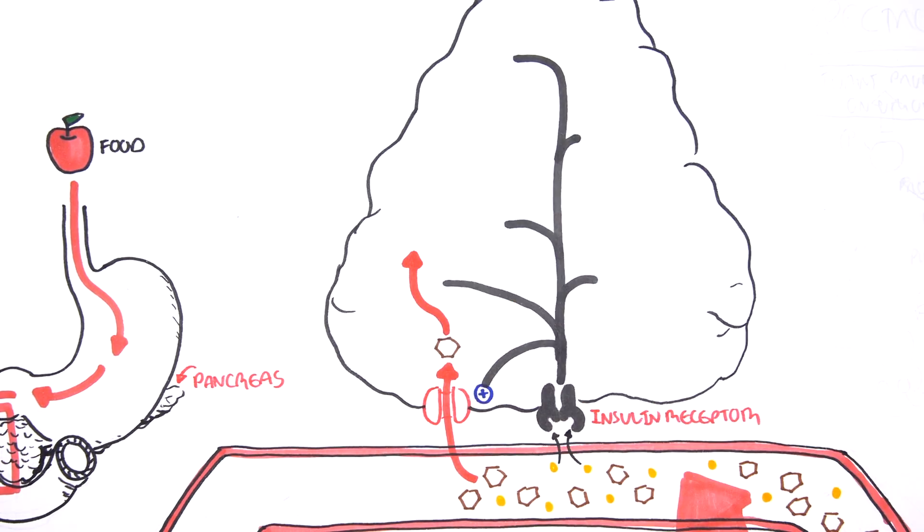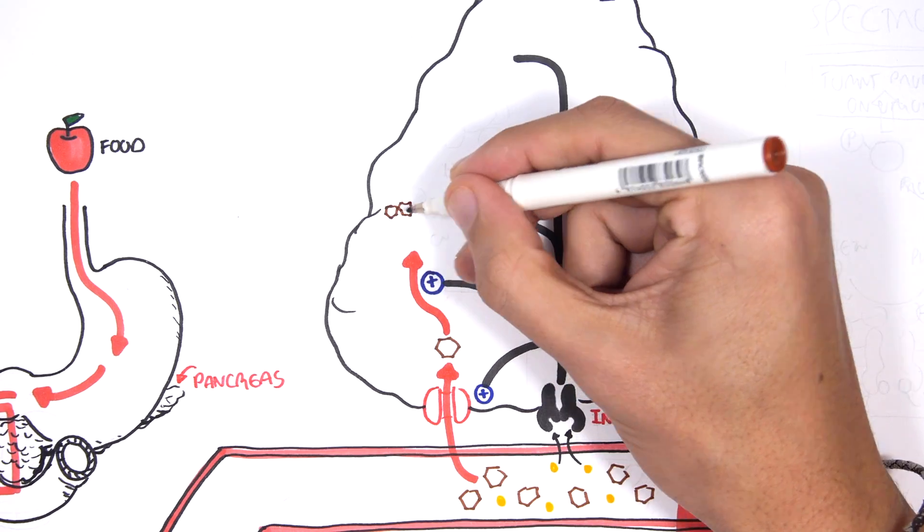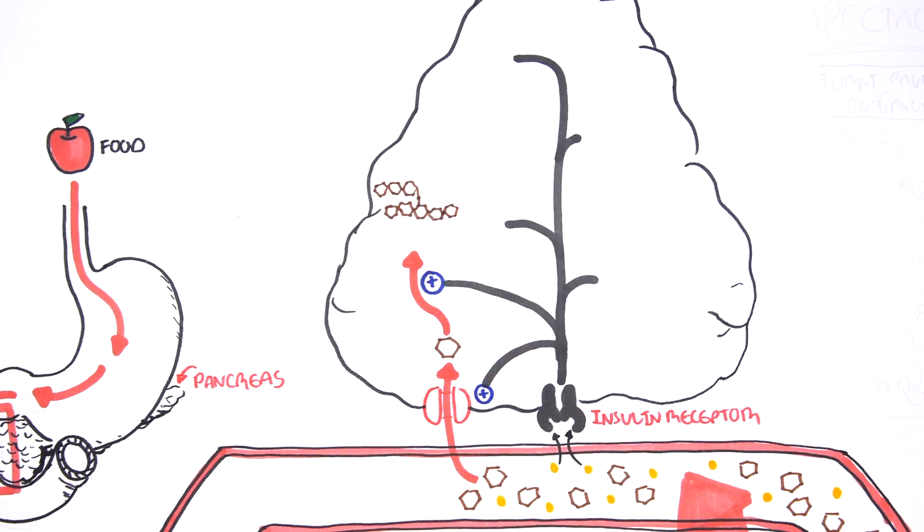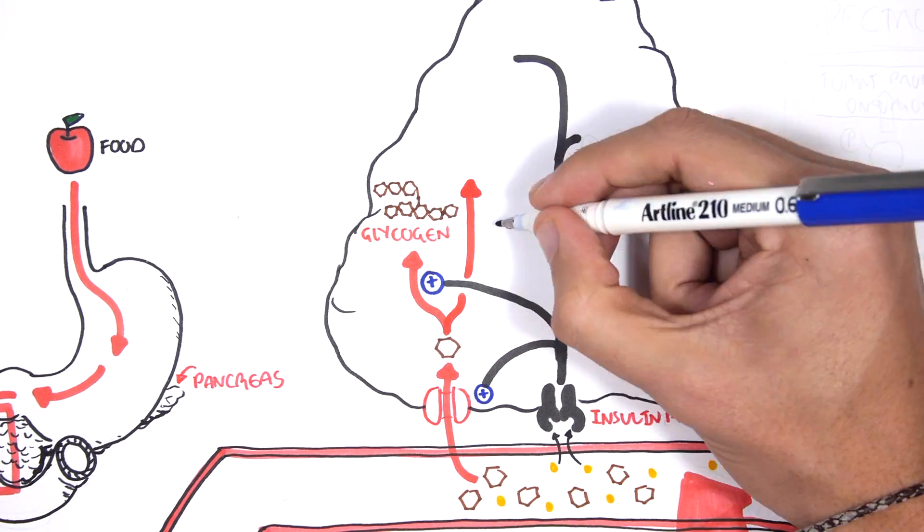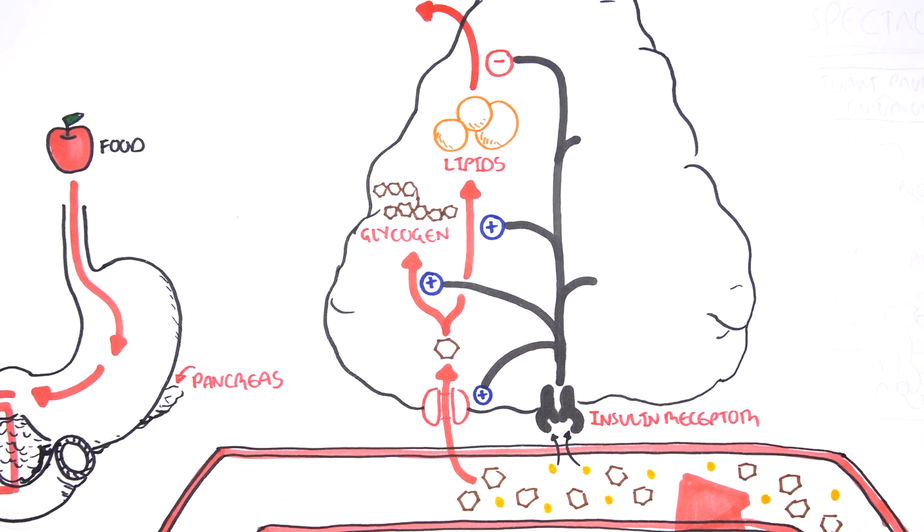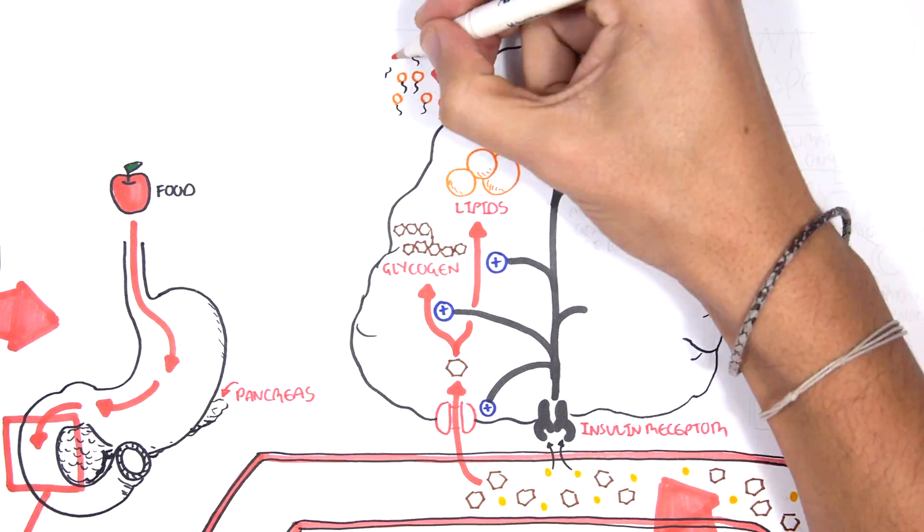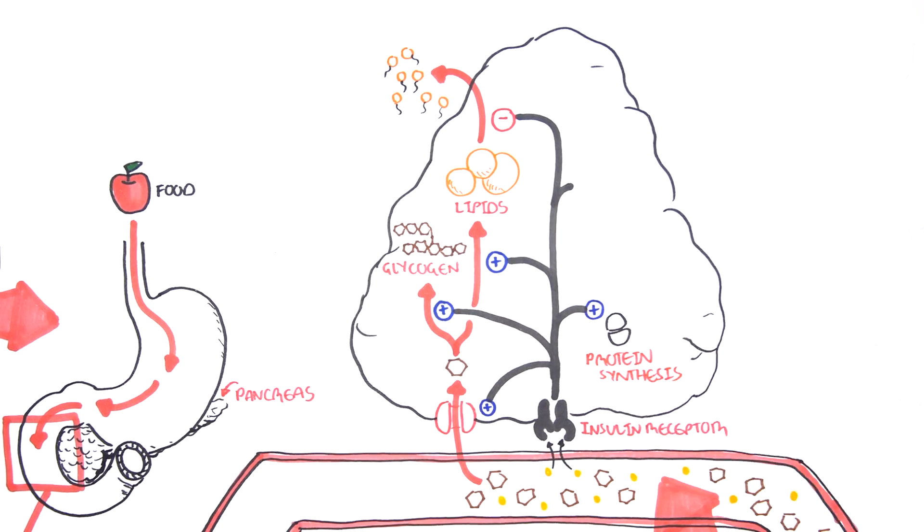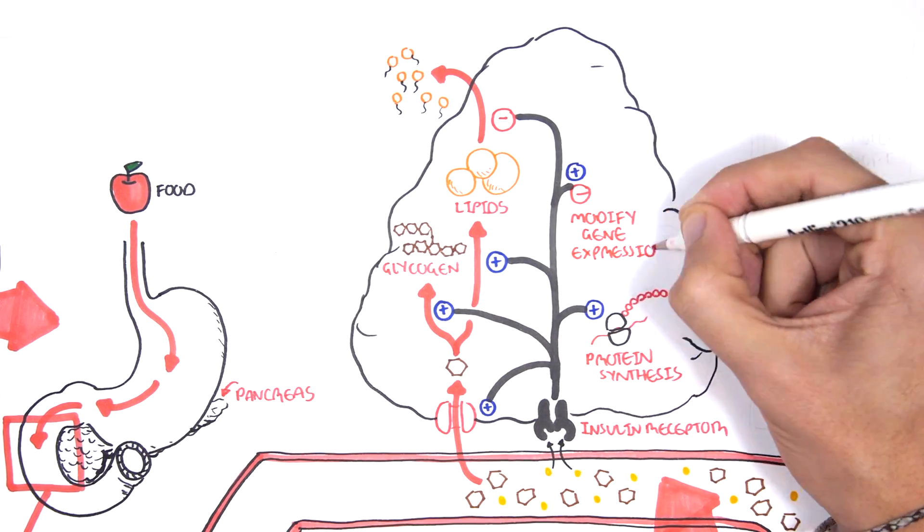These outcomes include the uptake of glucose and promoting glucose storage in the form of glycogen. In fat cells, insulin promotes glucose storage in the form of lipids, inhibits the breakdown of lipids, stimulates protein synthesis and modifies gene expression.